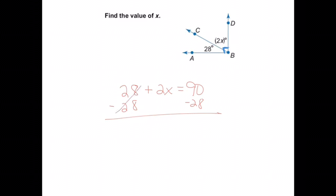That gives me a zero pair. So I get 2x equals 62. Now I need to divide both sides by 2 to get x by itself. And I get x equals 31. So the value of x in this case is going to be 31.